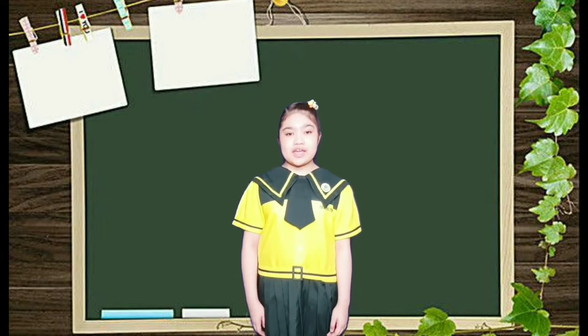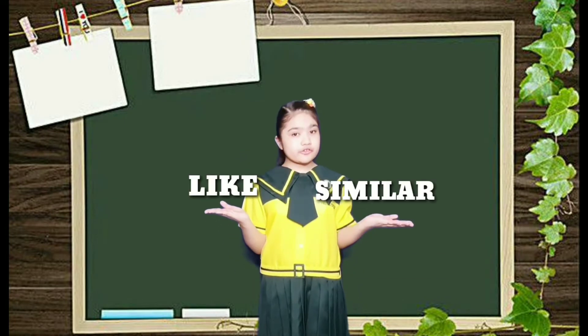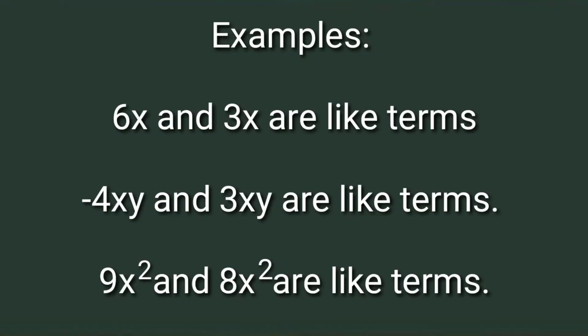An expression may contain like or similar terms. Samples: 6x and 3x are like terms. Negative 4xy and 3xy are like terms. 9x squared and 8x squared are like terms.